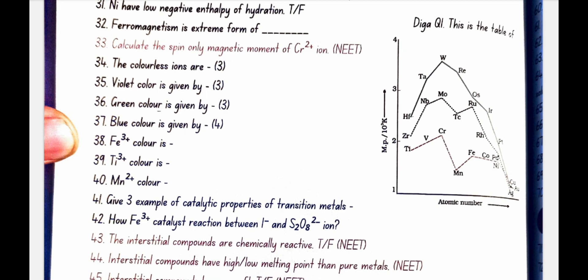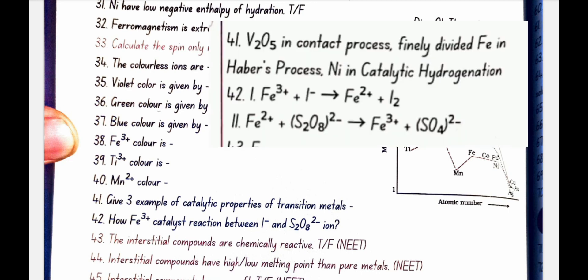Give 3 examples of catalytic properties of transition metals. V2O5 in contact process. Finely divided iron in Haber's process. Nickel in catalytic hydrogenation.